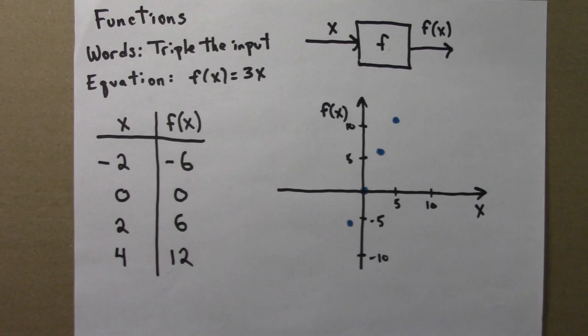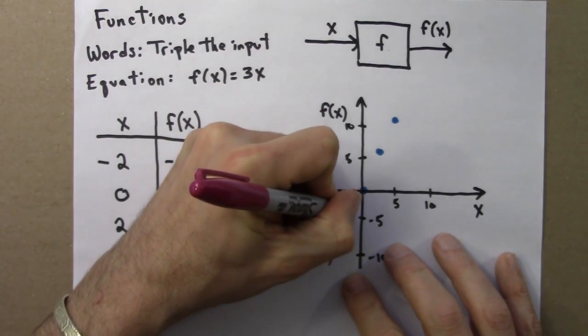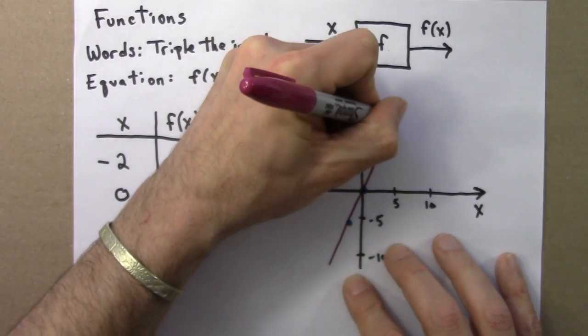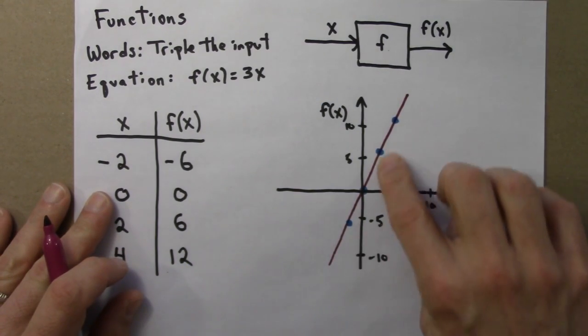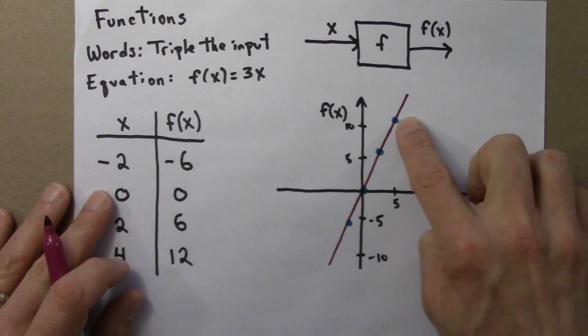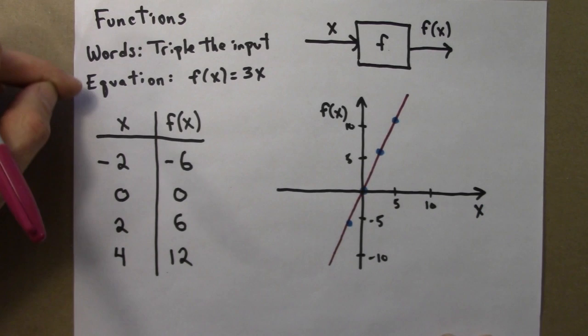So I'm just taking these numbers and plotting them. And this function turns out to be a line—it's a linear function. So I can just connect the dots. And that would be a graph of the function. So this purple line is the function.